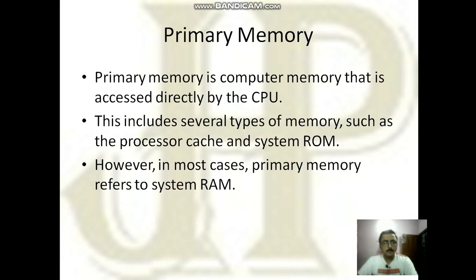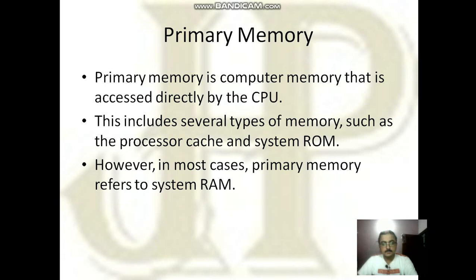What is primary memory? It is computer memory that is accessed directly by the CPU. Whatever data is given by the user is kept in primary memory, and that data is accessed directly by the CPU whenever it wants to process it. This includes several types of memory such as processor cache and system ROM. In most cases, primary memory refers to RAM.